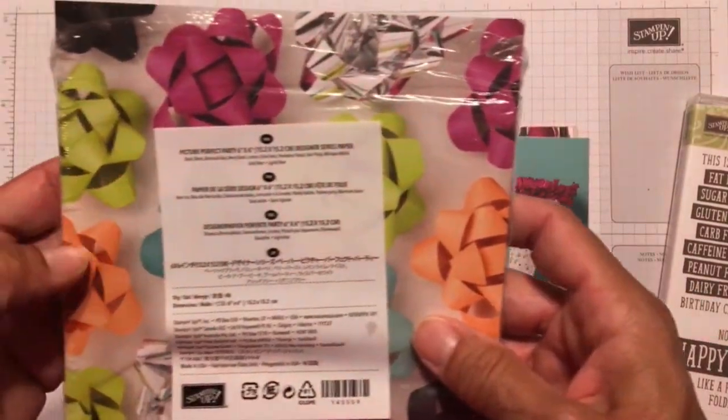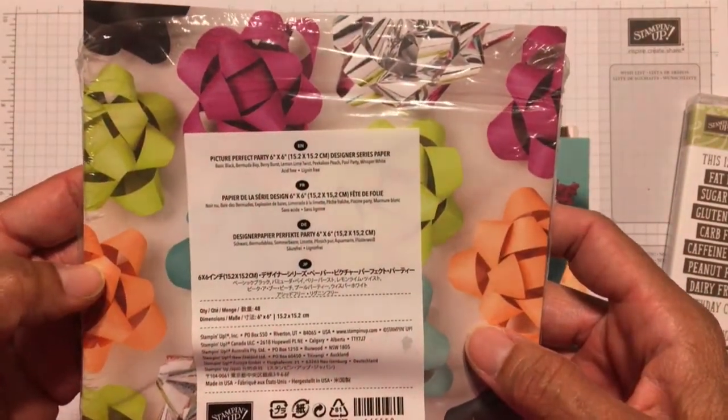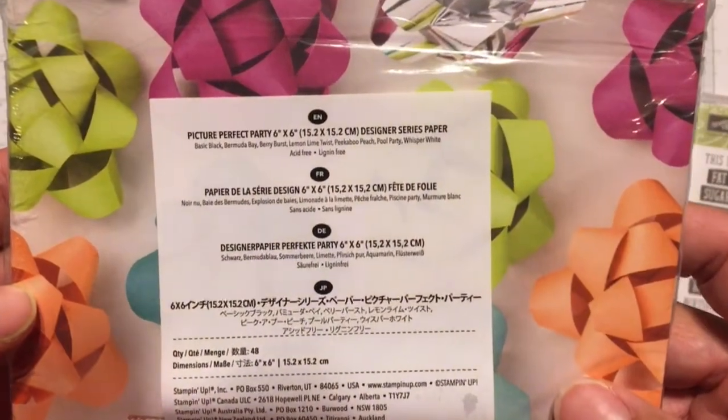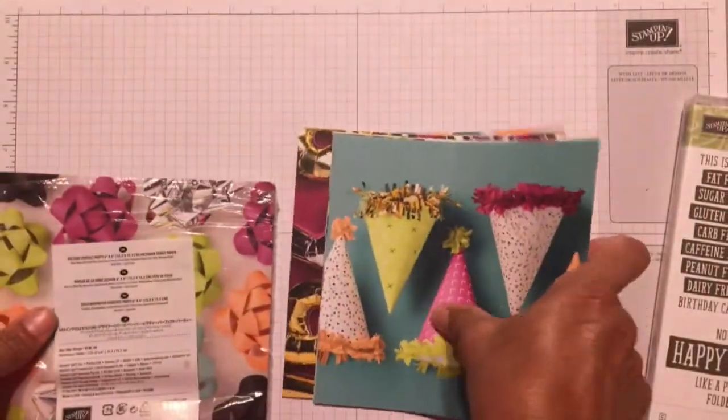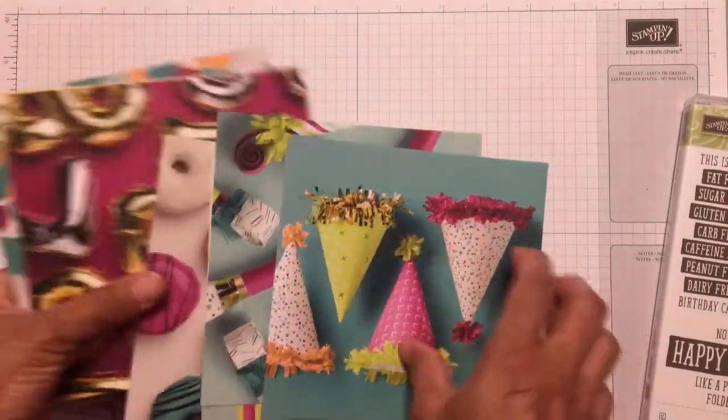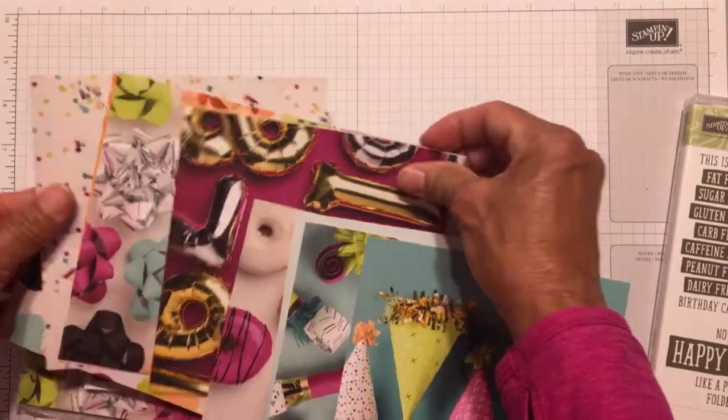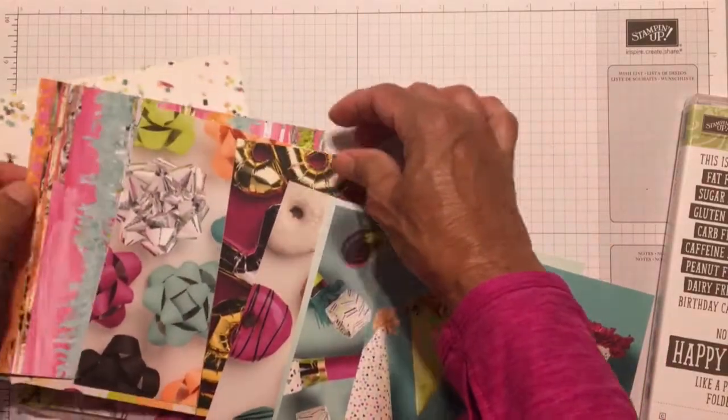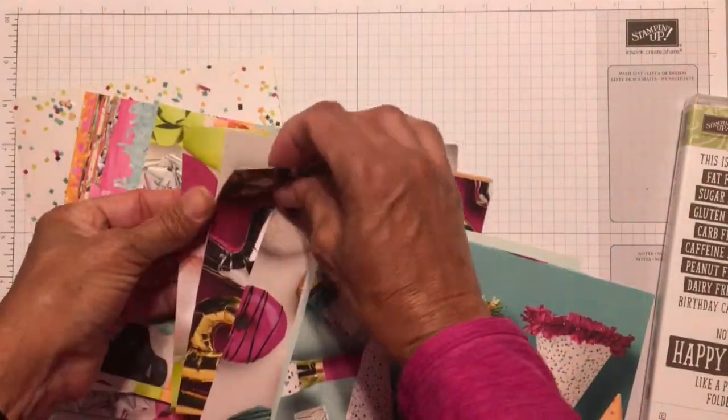And the paper pack that I'm using is the Picture Perfect Party 6x6 pack. So this pack has a lot of papers that are pictures. And then on the backs, you have patterns with coordinating colors.